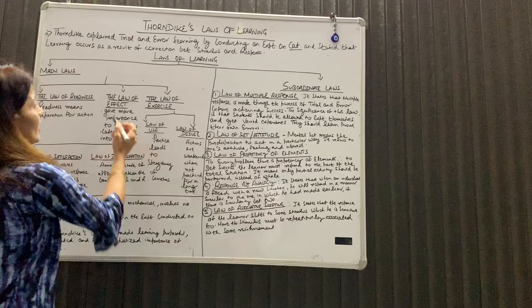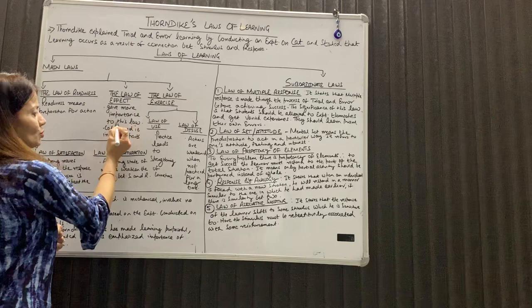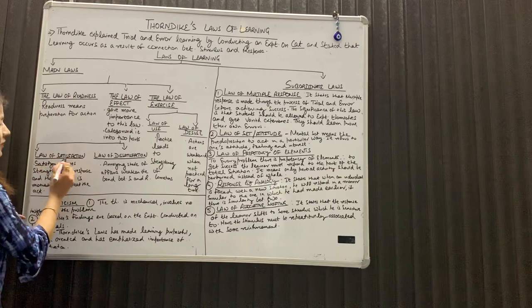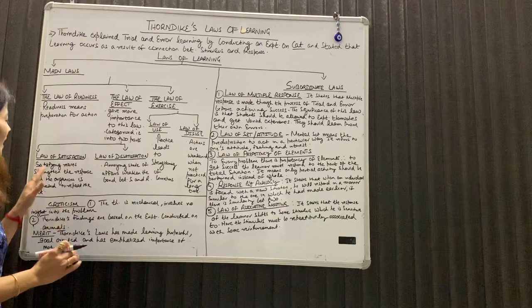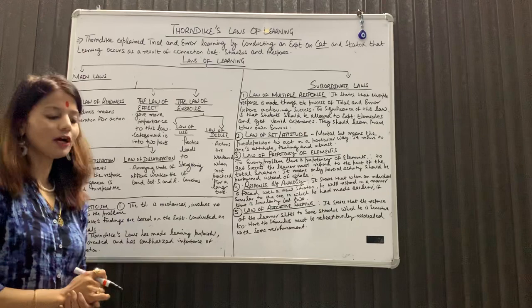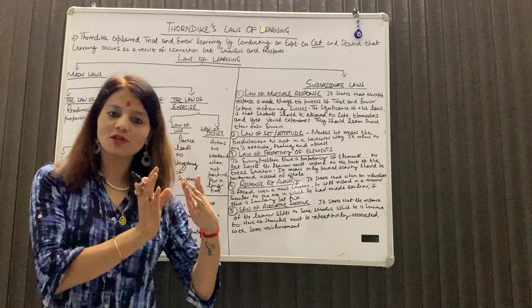दूसरा law है the law of effect. Thorndike ने सबसे ज़्यादा importance इसी law को दी थी. उन्होंने इसे further दो parts में divide किया था. पहला part है law of satisfaction, दूसरा है law of dissatisfaction. Satisfying result strengthens the response and the organism is motivated to repeat the act. यदि हम कोई चीज़ करते हैं और हमें उस कार्य में संतुष्टि महसूस होती है, तो हम उस कार्य को बार-बार repeat करते हैं और stimulus और response का जो bond है, वो और strong होता जाता है.